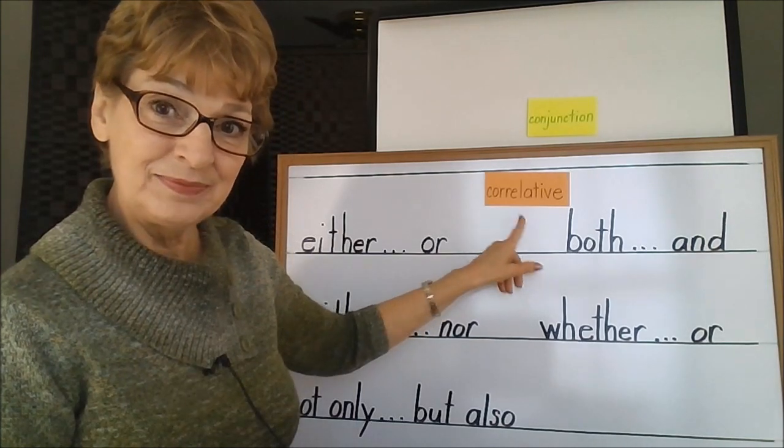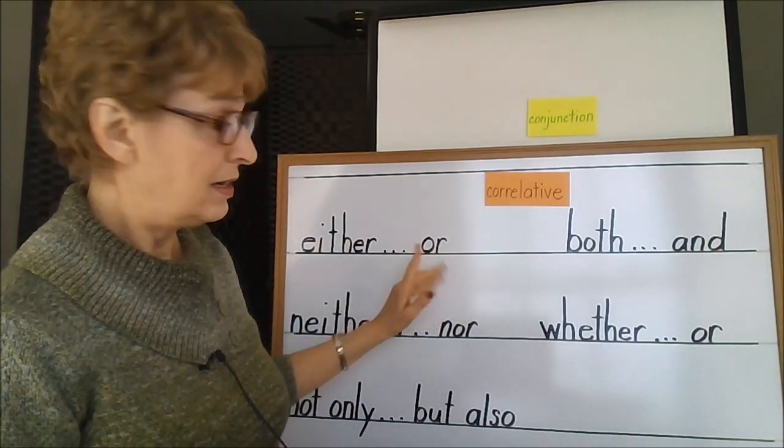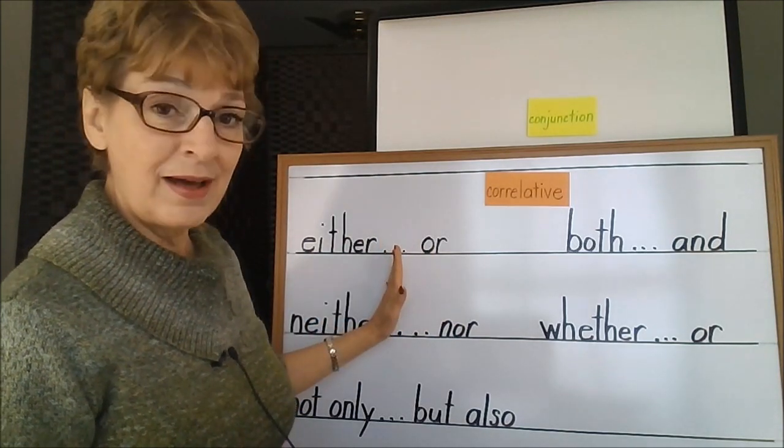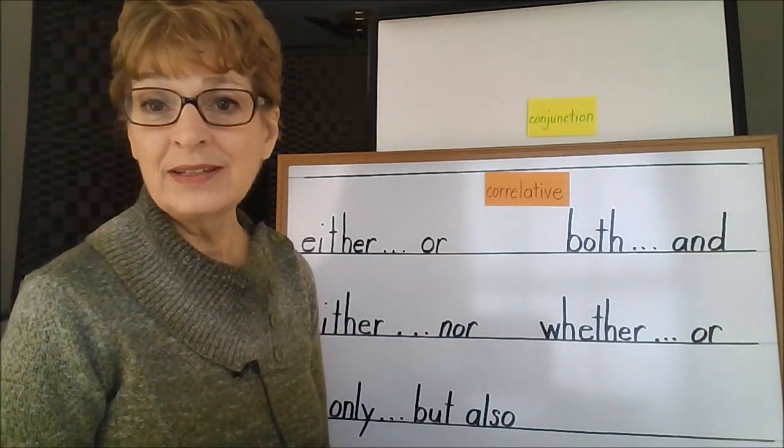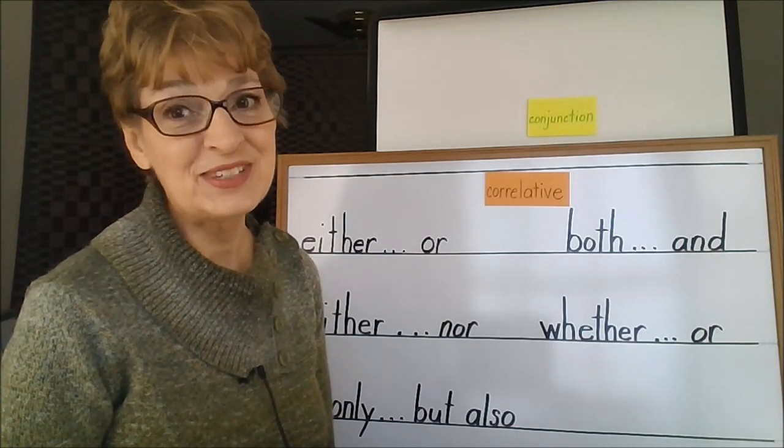Correlative conjunctions. Two conjunctions in the same sentence separated by other words in the sentence. Correlative conjunctions. Another tool to make your writing more sophisticated.